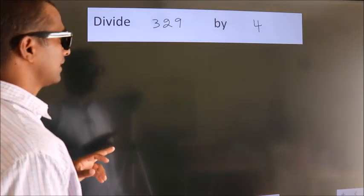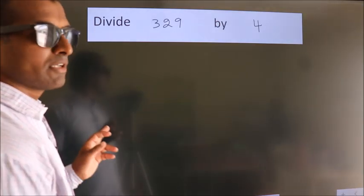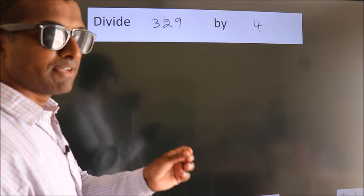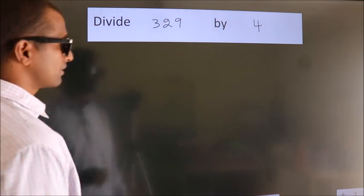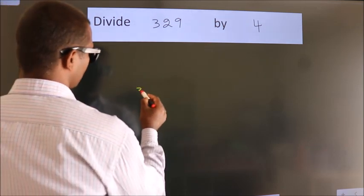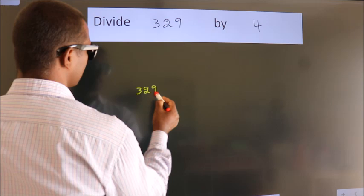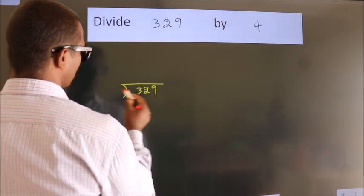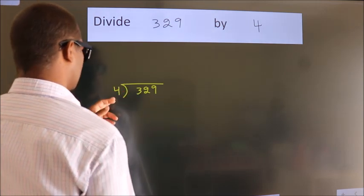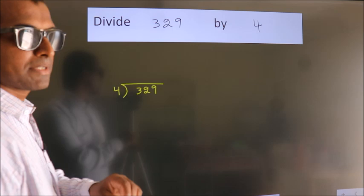Divide 329 by 4. To do this division, we should frame it in this way. 329 here, 4 here. This is your step 1.